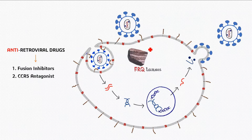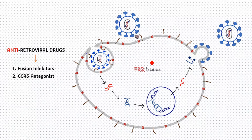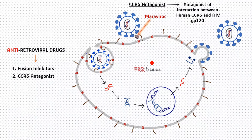Next is the category of CCR5 antagonists. Imagine placing a piece of rock between gp120 and CCR5 — if we place something between the CCR5 receptor and gp120 they won't interact, and the virus won't be able to enter our cell. The analogy of rock is used because the drug name is maraviroc — it ends with 'rock.' There is also another drug with the same ending sound: aplaviroc. These drugs act as antagonists and won't allow the binding of gp120 and the CCR5 coreceptor.